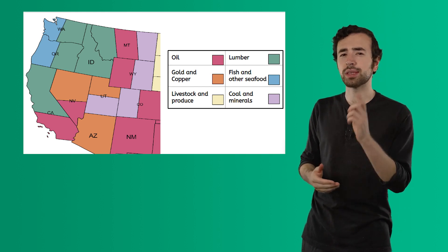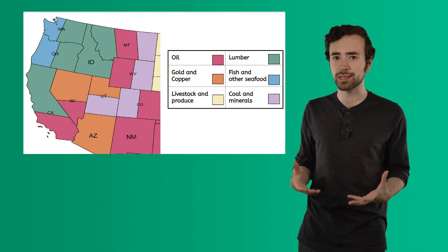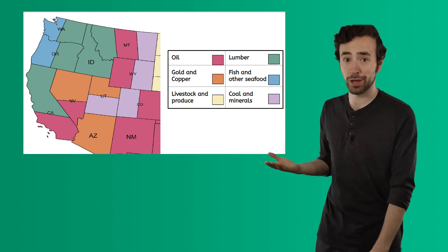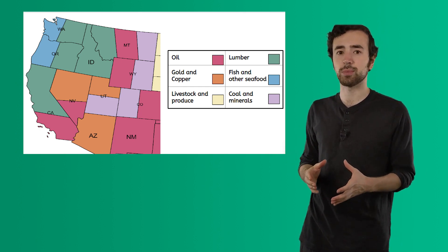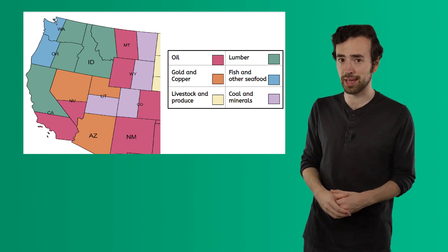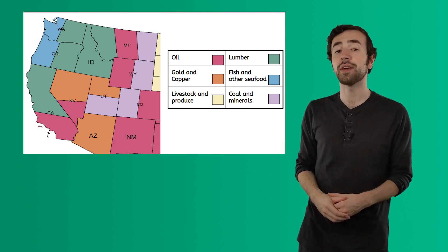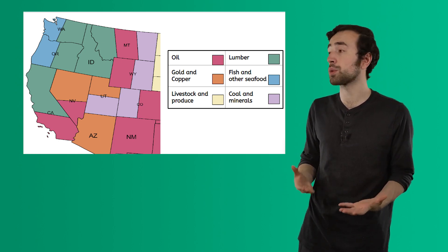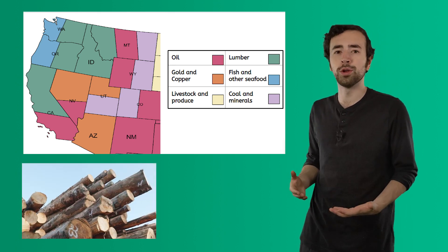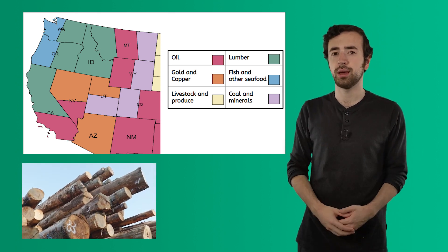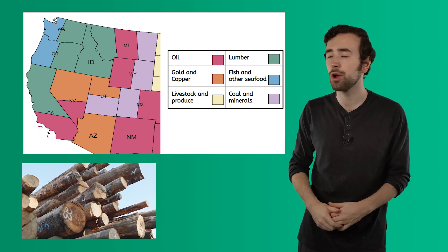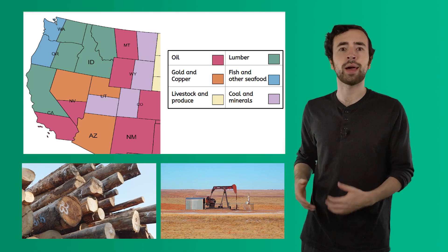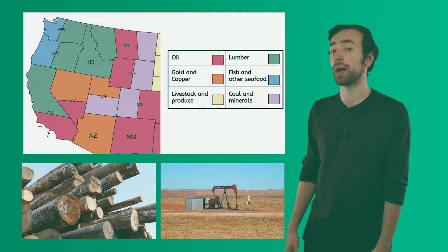Our next type of map, an economic map, shows the natural resources that come from the states in the west. When I look at Montana, I see that the state has been divided up and has a few different colors on it. According to the key and the colors in Montana, I can come to the conclusion that a few different natural resources come from this area: lumber, oil, coal, and other minerals. I can infer that there must be businesses and jobs there related to these resources, like logging, oil field production, and coal mining.